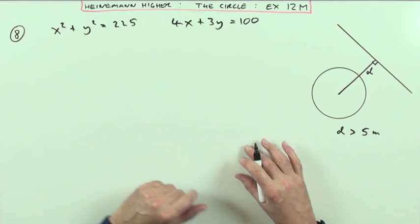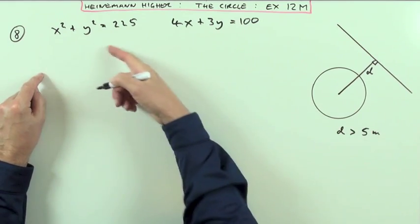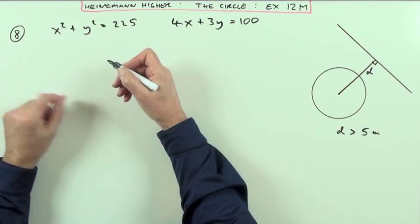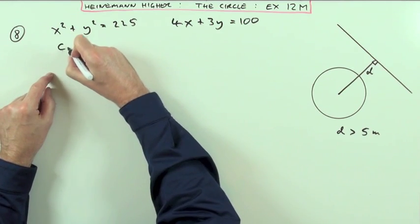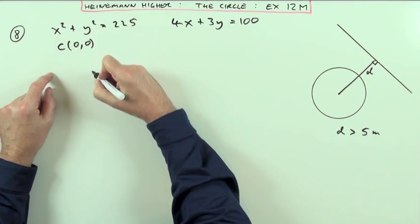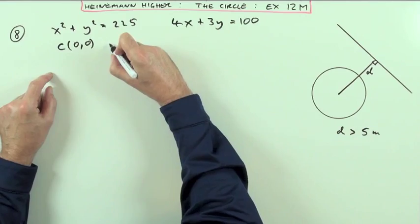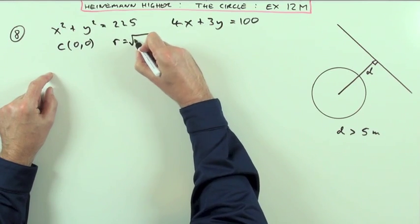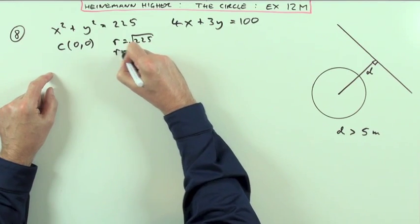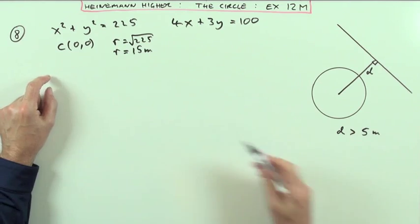Let's get some information. What's the equation of this circle? The center is at the origin, so I could call that O, and the radius will be the square root of 225, which means the radius is 15, and all the units are in meters.